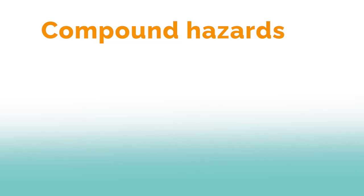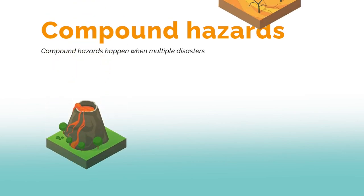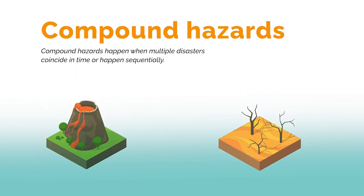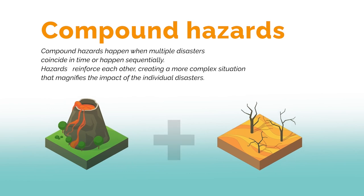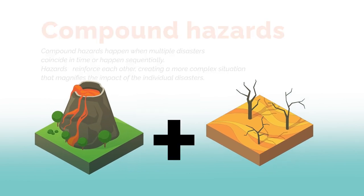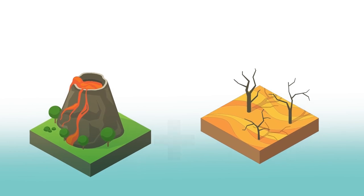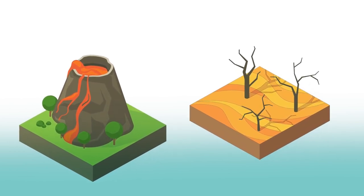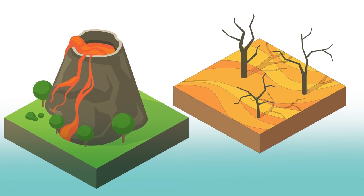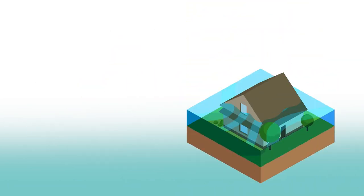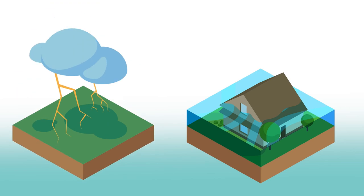Compound hazards happen when multiple disasters coincide in time or happen sequentially. In this case, hazards do not cascade causing each other — they compound, meaning they reinforce each other, creating a more complex situation that magnifies the impact of the individual disasters. A hydrological hazard such as a flood can compound with a meteorological hazard like a storm.